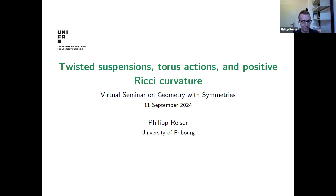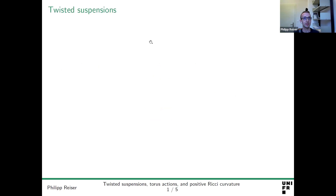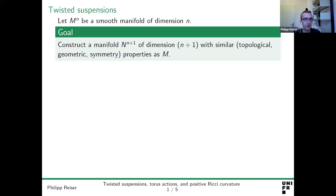Please feel free to interrupt with comments or questions at any time. So I want to discuss what's called the twisted suspension. This is motivated by a relatively vague question: given a smooth manifold of some dimension n, can we take this manifold and construct a new manifold of one dimension higher, so that the new manifold has similar properties in terms of topology, geometry, or symmetries?